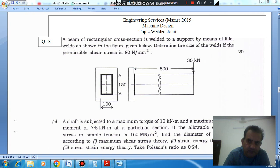Determine the size of the weld if the permissible shear stress is 80 N per mm square. So this is your weld, this is 100 mm wide and this is 150 mm deep. And an eccentric load of 30 kN is acting at a distance of 500 from one end.